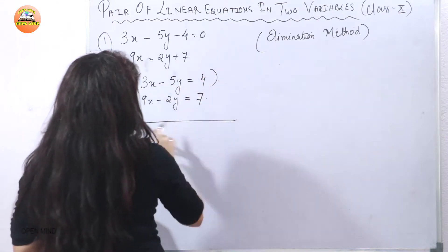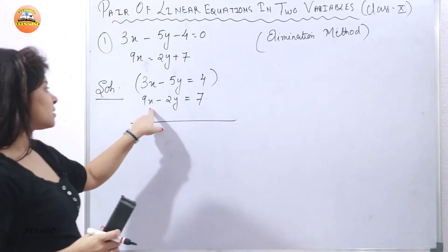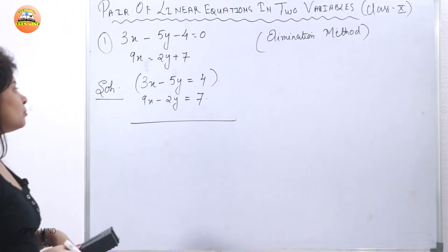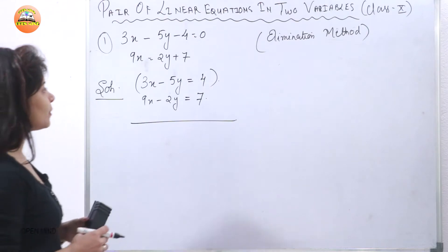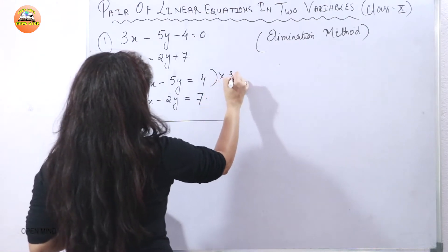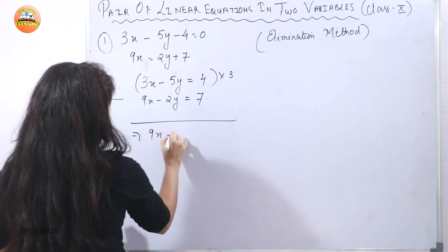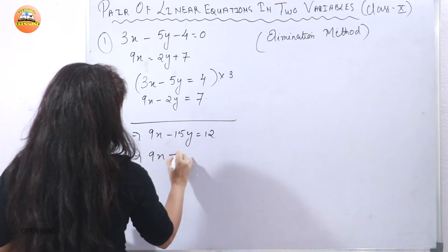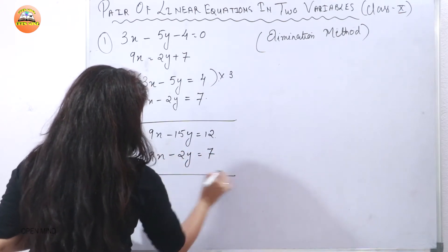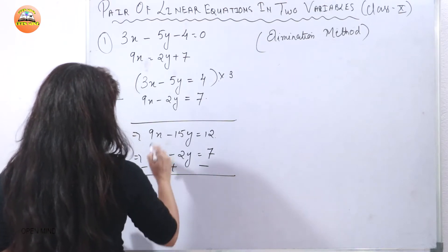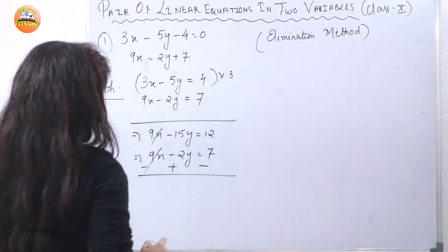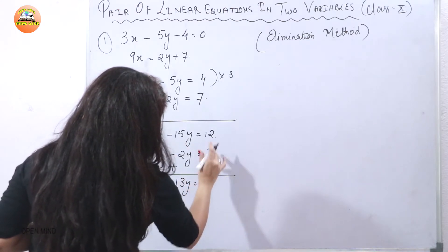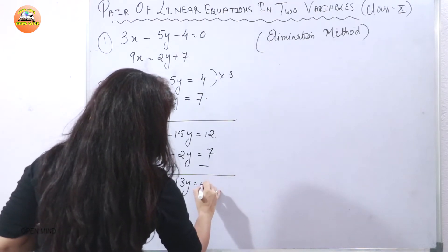Now I want to remove one of the variables — either x or y. I choose to remove the x variable. So I multiply the first equation by 3, giving 9x minus 15y equals 12. The second equation remains 9x minus 2y equals 7. When we subtract, the 9x terms cancel. We get negative 15y minus negative 2y, which is minus 13y, and 12 minus 7 equals 5.